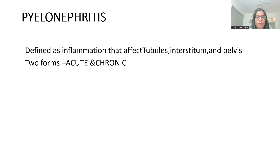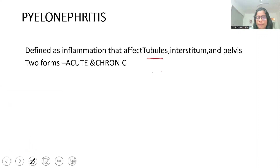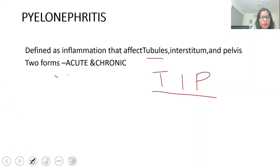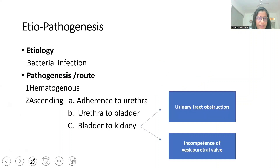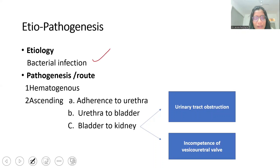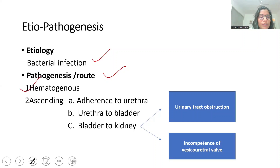Now sharing the APT of chronic pyelonephritis. What is pyelonephritis? It is an inflammation that affects the tubule, interstitium, and the pelvis — an inflammatory disorder of two forms: acute and chronic, depending on the nature of the inflammatory infiltrate and the onset. For etiopathogenesis, the etiology is infection, most commonly bacterial infection, sometimes viral.